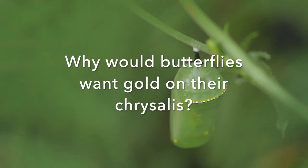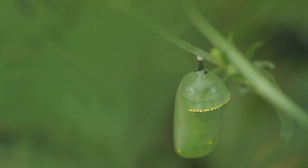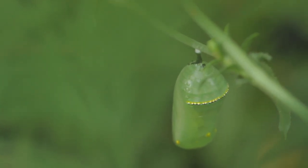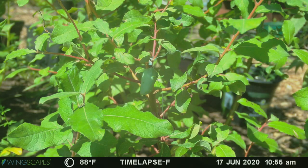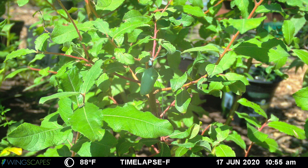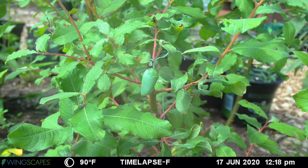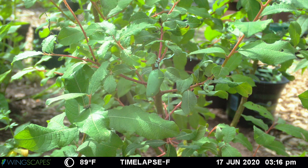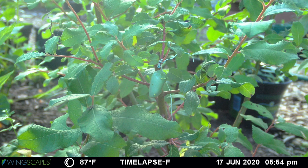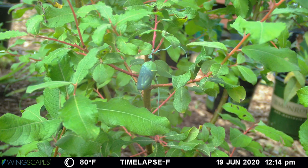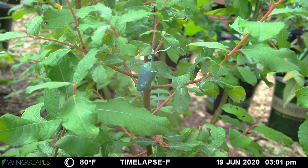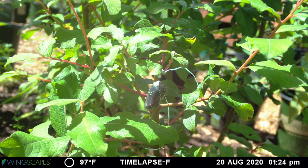Why might butterflies want their chrysalises to have glittery gold on them? One theory is that the gold highlights on the chrysalis act as camouflage — they make the chrysalis harder to detect, and the shiny material resembles water droplets on leaves. Depending on the species and conditions outside, a caterpillar can stay in its chrysalis from 5 to 21 days. Monarch chrysalises start off very green and opaque and begin to get more transparent over time, to the point where you can make out the wings and other parts of the butterfly.